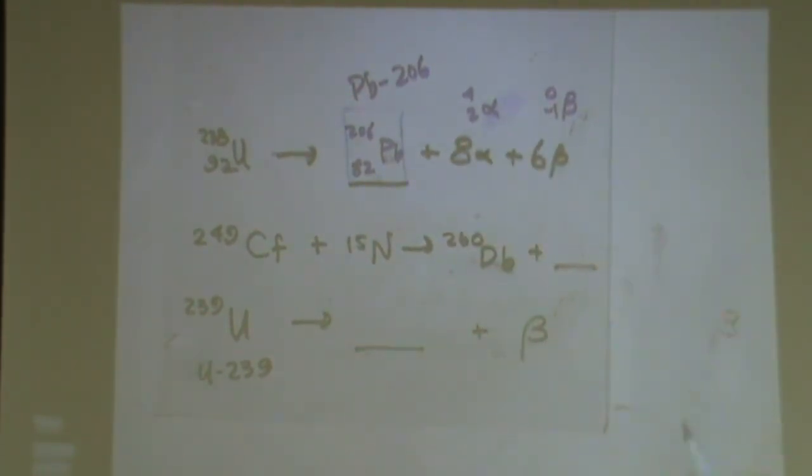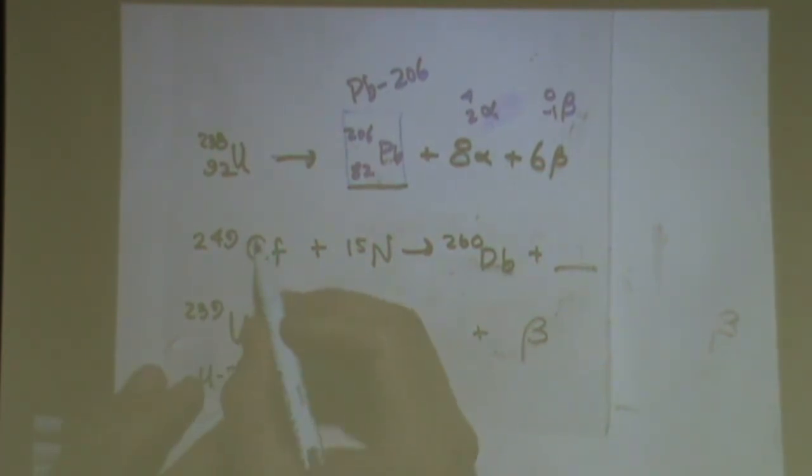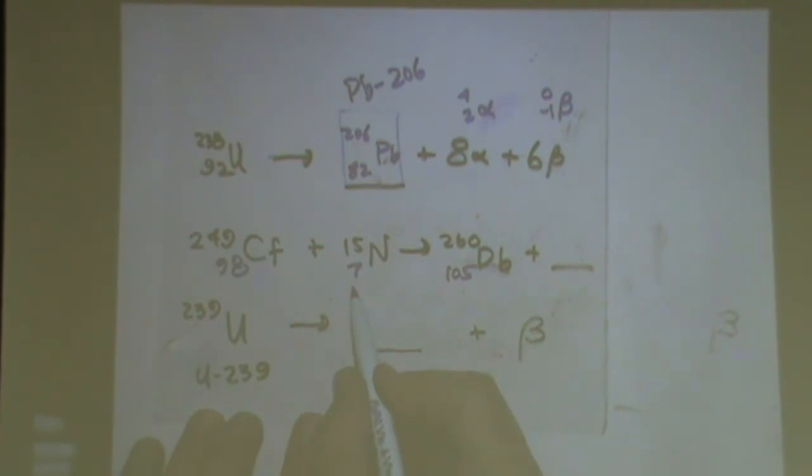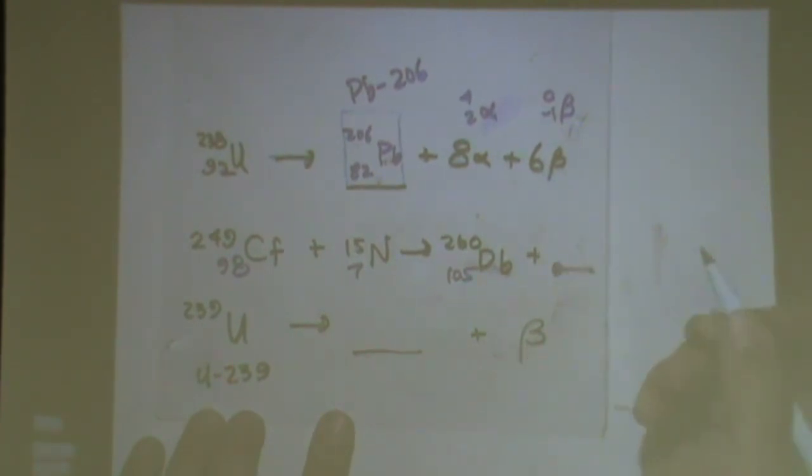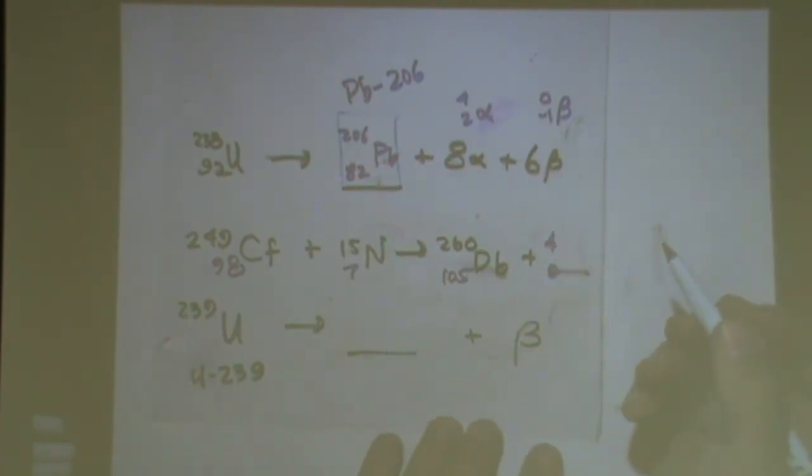The next one, I have this californium and nitrogen going into dubnium and some mystery. Let's see. Let's fill in the blanks here. 98, 7. Dubnium is 105. 98 and 7 is 105, I think. Zero. 249 and 15. That's like 264. So this would be a 4. What the heck is this? Neutrons. Yeah, it's actually 4 neutrons. There's nothing else that would have a 0 there.